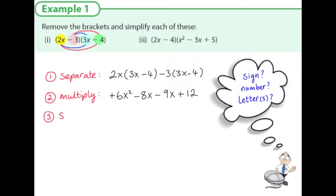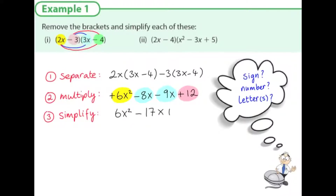The last part is we want to simplify. Simplify means we're allowed to add or subtract the like terms. We have four different terms: 6x squared — with no other x squared terms — minus 8x and minus 9x, which are like terms, and a constant 12 at the end. Adding minus 8x and minus 9x gives minus 17x, so the answer is 6x squared minus 17x plus 12.